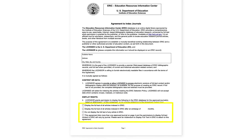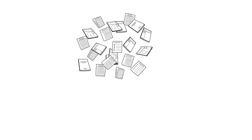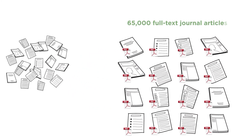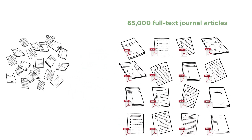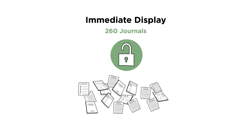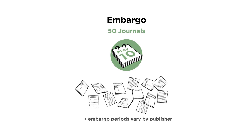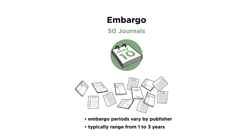The agreements with non-journal providers include similar language. A growing number of journal publishers allow ERIC to display full-text articles. As of fall 2017, there were nearly 65,000 full-text journal articles in ERIC. About 260 journals allow ERIC to display full-text immediately, and nearly 50 journals permit full-text to display following an embargo. Embargo periods vary by publisher and typically range from one to three years.